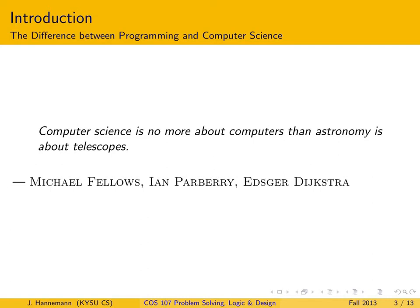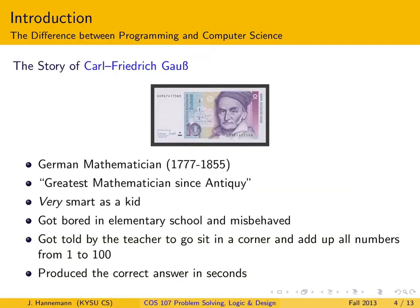There are probably many more names, but the quote is really capturing the essence of the relationship between computer science and programming. In other words, every computer scientist should be able to be a programmer, whereas not every programmer by default will automatically be a computer scientist. To give you an illustration on what I mean by that, let me tell you the story of Karl Friedrich Gauss — a German mathematician in the 19th century and many regard him as one of the greatest mathematicians ever.